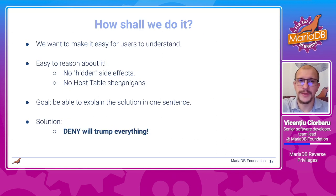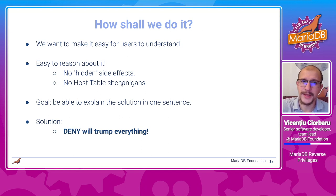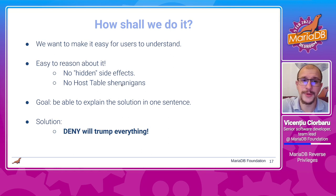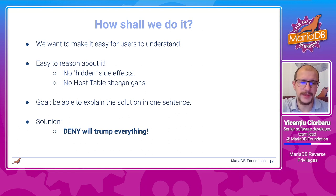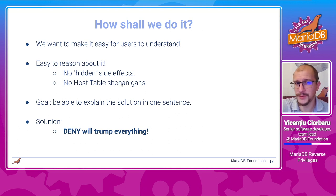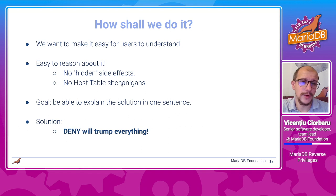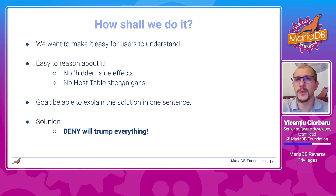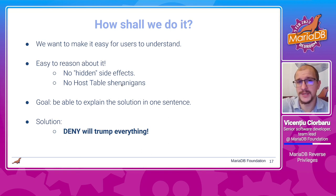So with that in mind, how should we do it? We have the following goals: we want to make it easy for users to understand, and it has to be easy to reason about. You need to be able to read a script and understand what it's going to do regardless of what's in your database. Also, there is a similar table called the host table with a vaguely similar purpose — we'd ideally prefer to drop it altogether. The goal is to be able to explain the solution in one sentence: deny will trump every other access. There are just one or two exceptions, and I'll get into those.